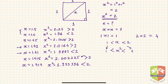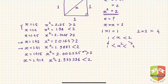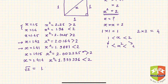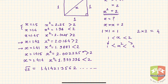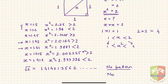A calculator gives root 2 as 1.41421356... and so on. If you notice carefully, none of the digits are repeating — there is no pattern. So we conclude: there is no pattern or repetition in the decimal representation of root 2.